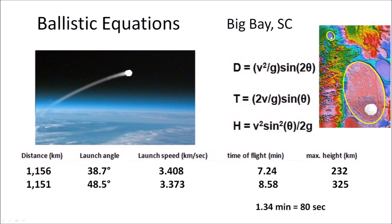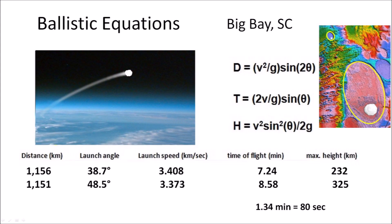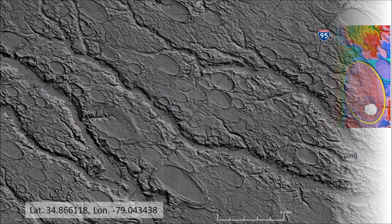The small projectile that hit the sand sheet arrived 1.34 minutes, or 80 seconds, after the projectile that made Big Bay. According to these ballistic calculations, this landscape of Carolina Bays and windblown sand sheets near Rex, North Carolina formed within 6 to 9 minutes after the extraterrestrial impact on an ice sheet by the Great Lakes — all within 3 to 4 minutes of each other.